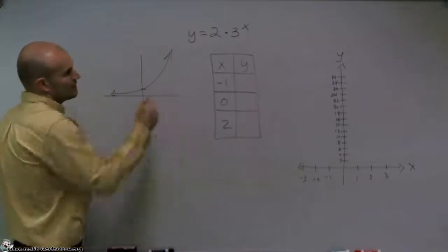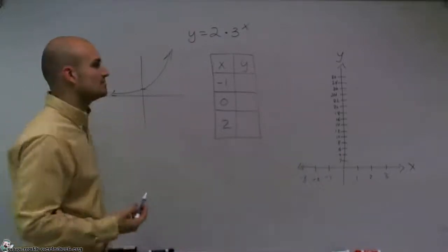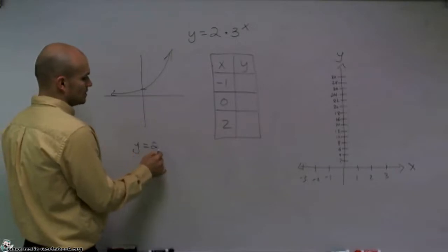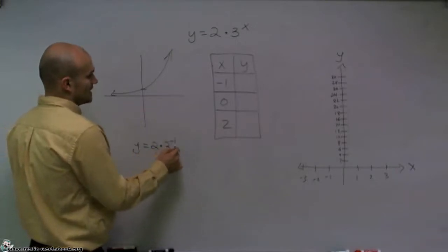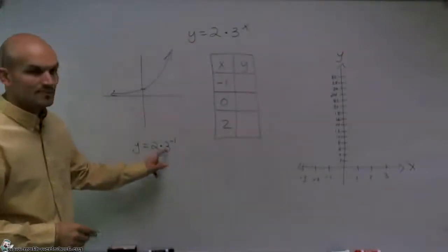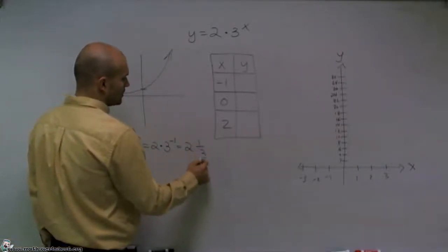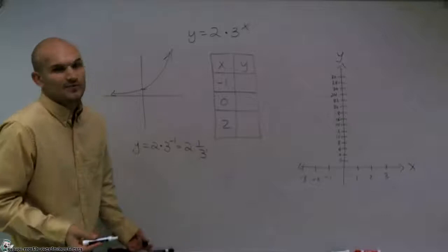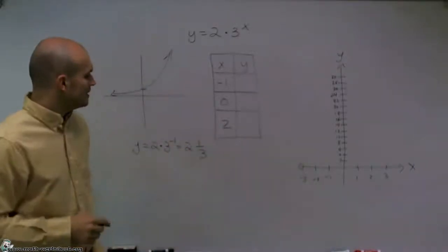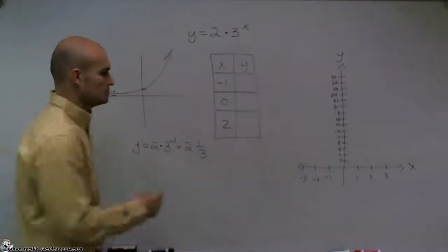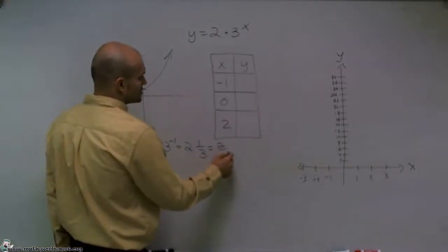To solve these out, all we're simply going to do is plug in your answer. So y equals 2 times 3 to the negative first. To simplify this, that equals 2 to the 1 over 3 to the first power. 3 to the first power is just going to be 3. So now I have y equals 2 times 1 third, which is 2 thirds.